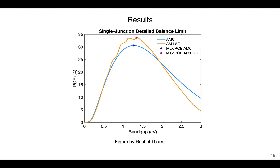The results show that the AM1.5G spectra has a limiting efficiency of around 33.6% at 1.34 eV, while the AM0 has a lower power conversion efficiency at a slightly lower bandgap. This shows not only the highest efficiency, but also the limiting efficiency for each bandgap energy from 0 to 3 eV. For example, if a material has a bandgap of 1 eV, the limiting efficiency would be around 32% for the AM1.5G spectra. This tells us what to aim for and what losses to reduce to approach the limit.